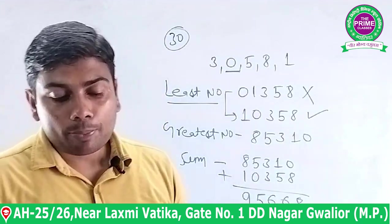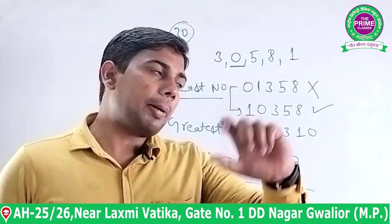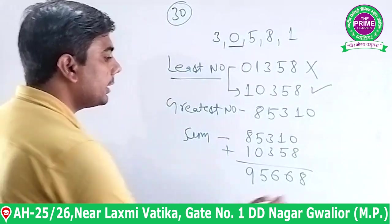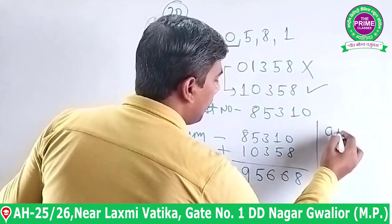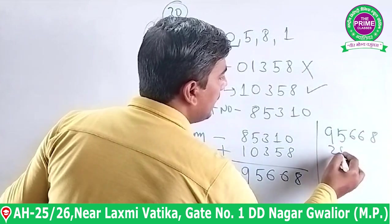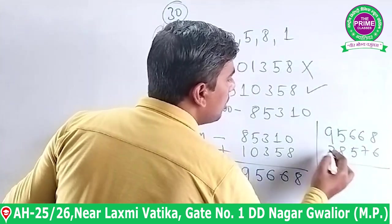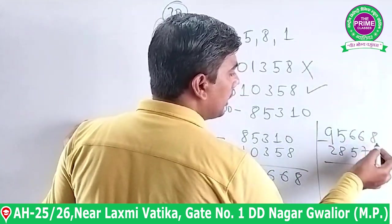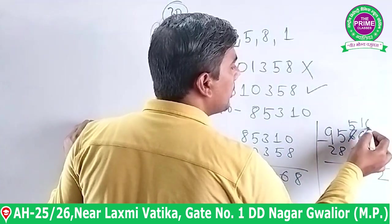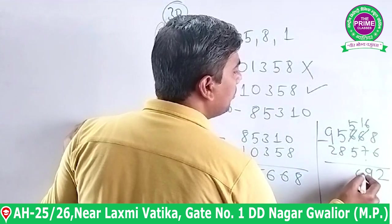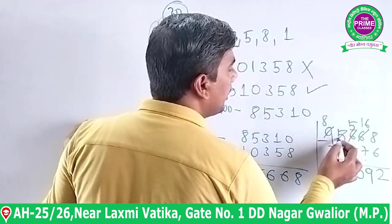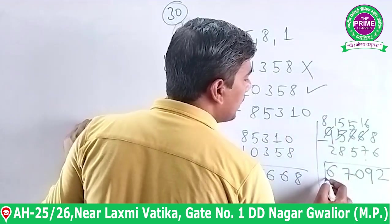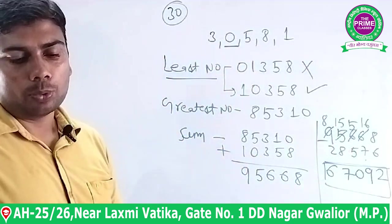अब 95668 में से 28576 subtract करना है। 8-6=2, ऊपर छोटा है तो borrow करेंगे — 15-8=7, 5-5=0, carry के बाद 8-2=6। Final answer: 67092।